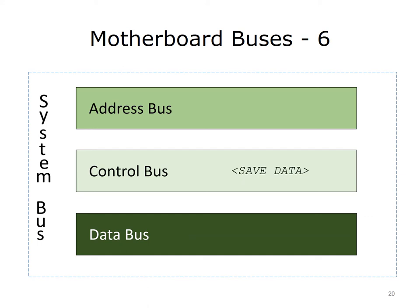An example would be helpful here. If a device requests that data be saved to the hard disk, the save command is placed on the control bus, the actual data to be saved is placed on the data bus, and the physical address on the hard disk is placed on the address bus.